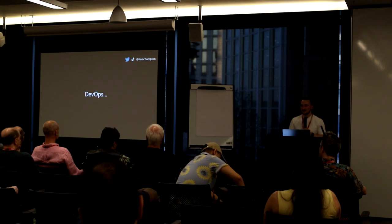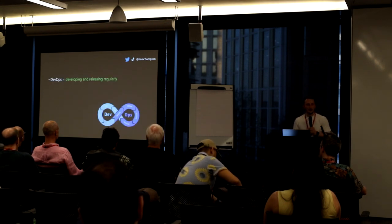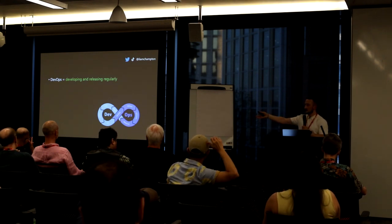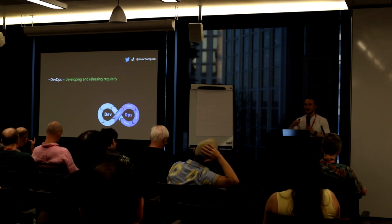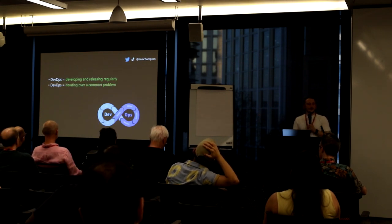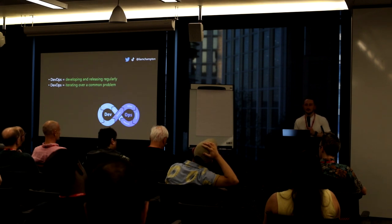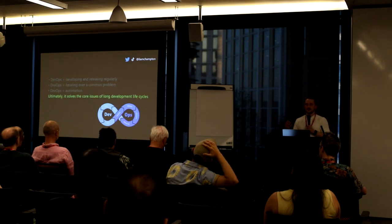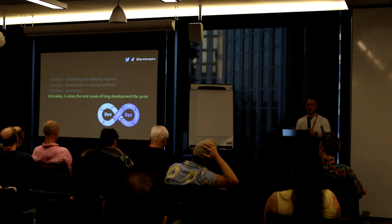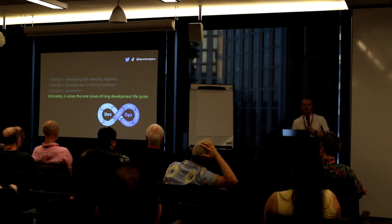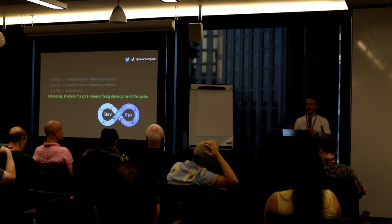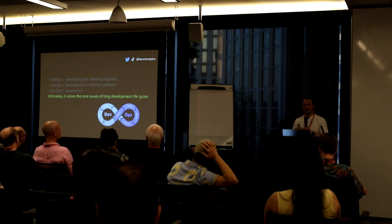So, DevOps. What is it? DevOps is about deploying and releasing regularly — the iteration. It's a continuous loop where you're iterating over a common problem as a team and automating that to get it done as quickly as possible. It basically solves the problem of long development life cycles. How does serverless impact DevOps? I often hear people say DevOps is dying because serverless is the next greatest thing — but it doesn't replace it; it actually helps quite a lot.